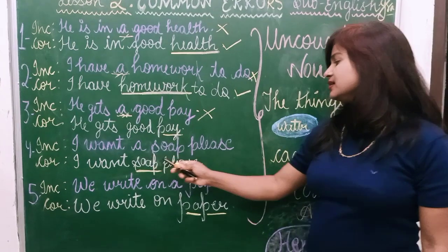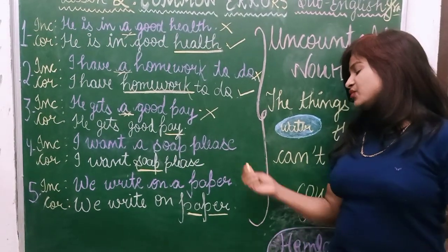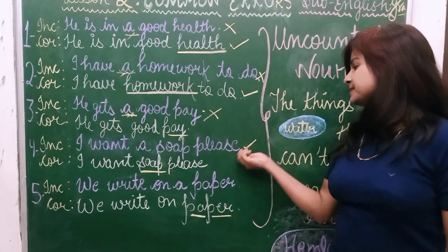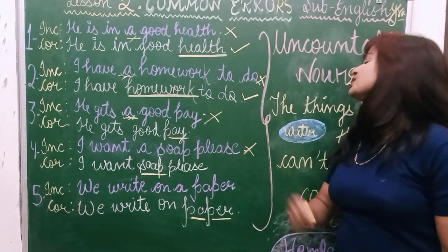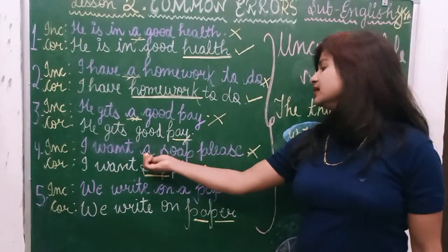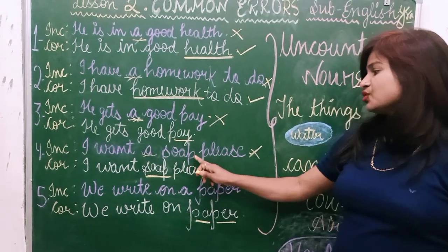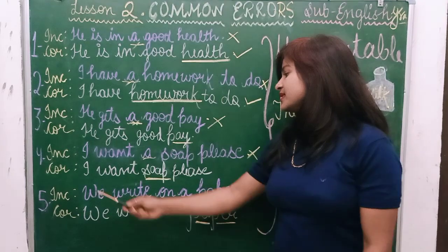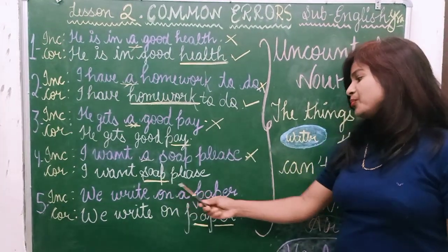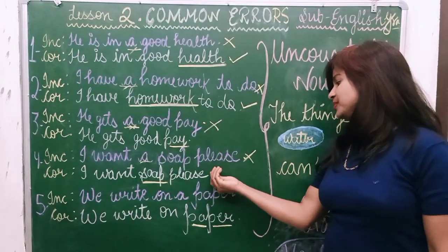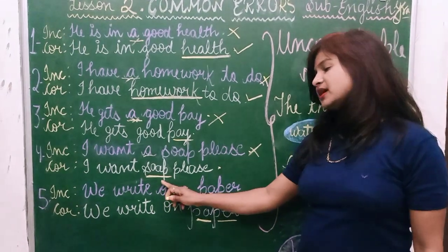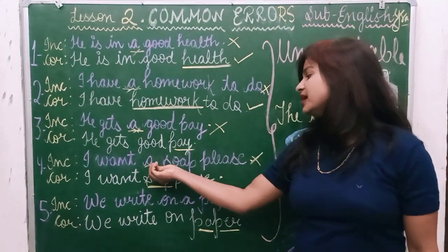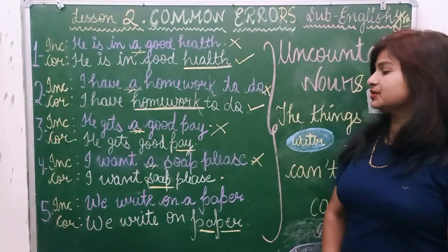Incorrect: 'I want a soap, please.' This is also an incorrect sentence. The reason is that Soap is an Uncountable Noun. The correct sentence is: 'I want soap, please.' Soap is uncountable, therefore we do not use any type of article before it.